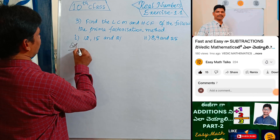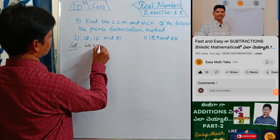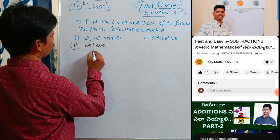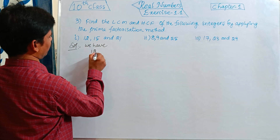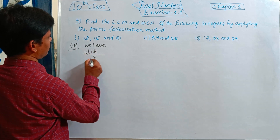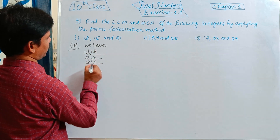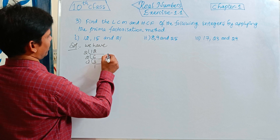First, take 12. Dividing: 2 into 6 is 12, 2 into 3 is 6, 3 into 1 is 3.